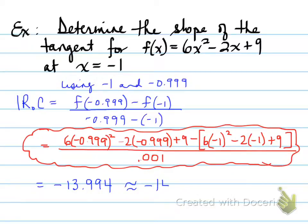What is -13.994 approximately equal to? Well, it's equal to -14. So, basically, when we find the instantaneous rate of change, we're going to find the closest number that matches that instantaneous rate of change. In this case, it's going to be -14.